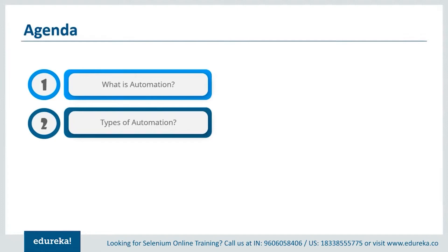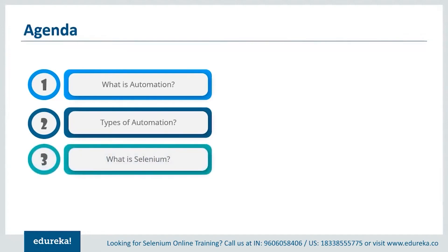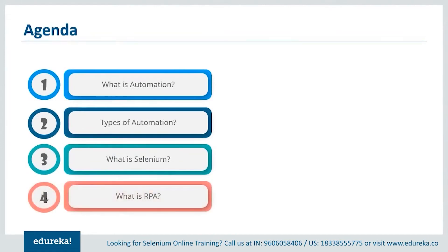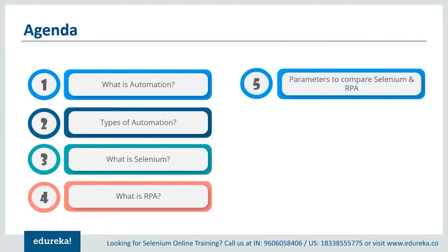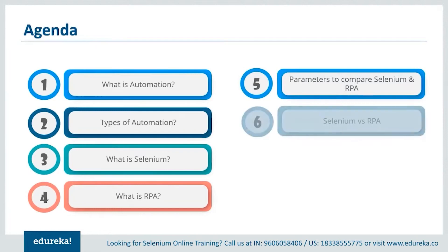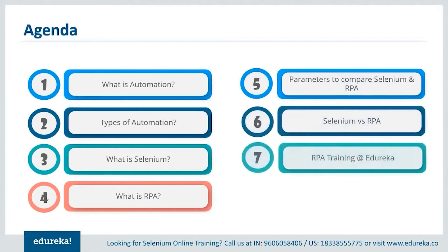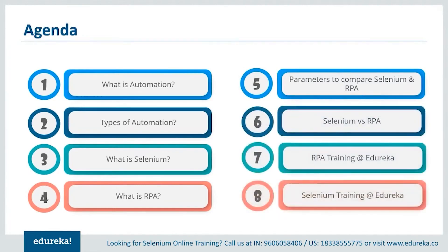First, we'll talk about the automation testing tool Selenium and learn its features. Once we're done with that, we'll take a look at the business process automation technology RPA and comprehend how it is used to automate repetitive tasks. Moving further, we'll discuss the parameters taken into consideration for comparing both Selenium and RPA and talk about the similarities between these tools. Finally, we'll wrap up this session by comparing them based on those parameters.